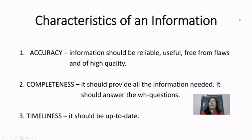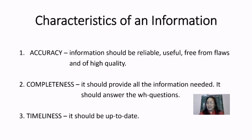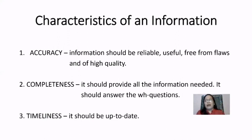So let us have the six characteristics of an information. Let us have the first one: accuracy. From the root word 'accurate,' we can say that a particular information is accurate or possessing this accuracy if the information is reliable, useful, free from flaws, and of high quality. That is the first characteristic that a particular information should have in order for us to find out if it is reliable or not.